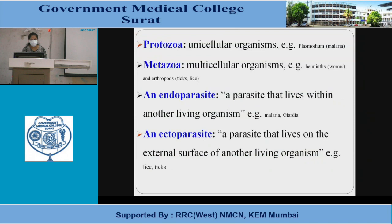Protozoa are unicellular organisms, for example Plasmodium. Metazoa are multicellular organisms, like helminths. An endoparasite is a parasite that lives within another living organism. An ectoparasite is a parasite that lives on the external surface of another living organism, like lice and ticks.